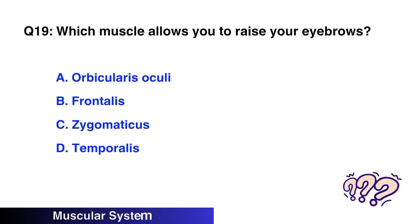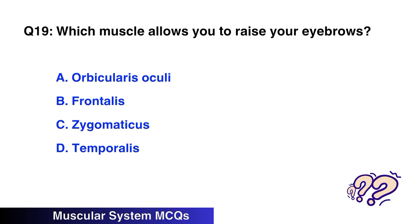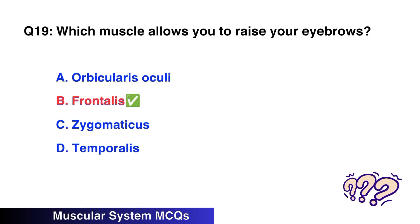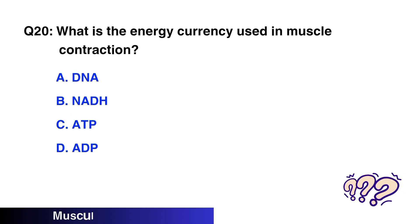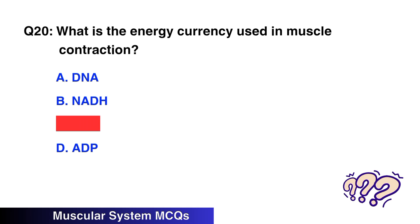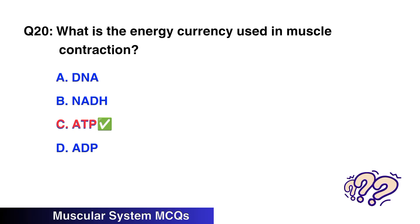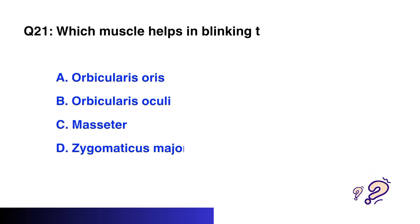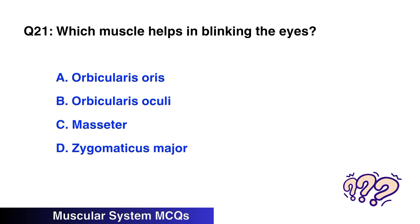Question No. 19: Which muscle allows you to raise your eyebrows? The right option is B: Frontalis. Question No. 20: What is the energy currency used in muscle contraction? The right option is C: ATP.